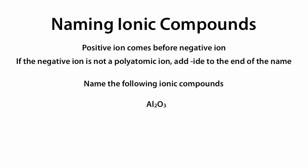Al2O3 is formed from aluminum and oxygen: aluminum oxide. We add -IDE to the end of the name because oxygen is not a polyatomic ion.